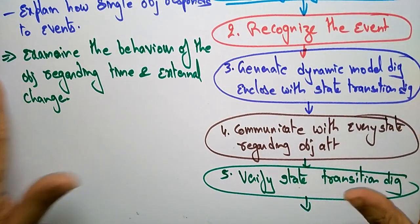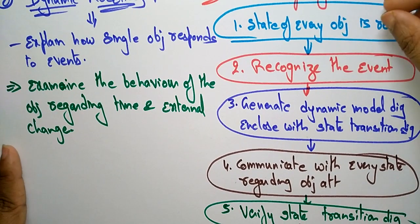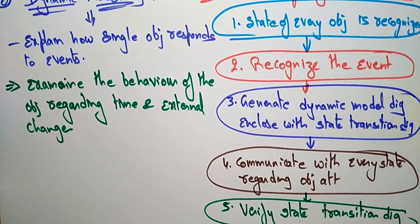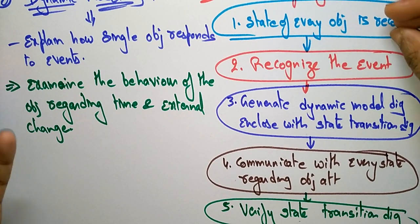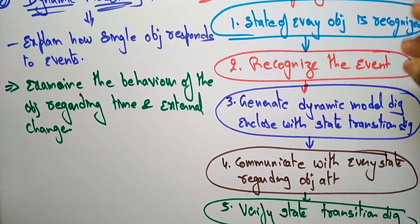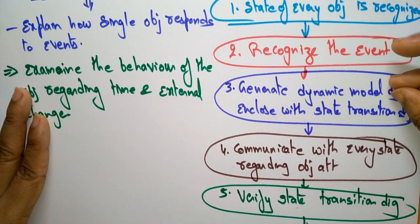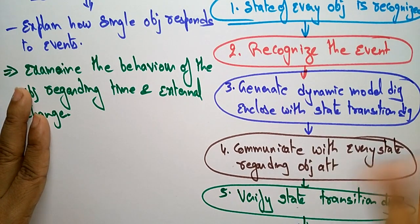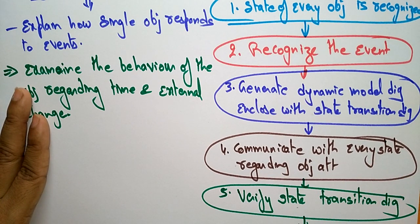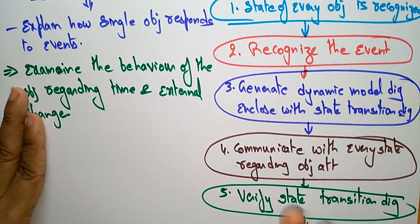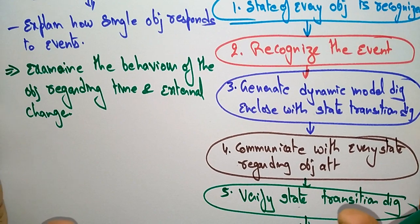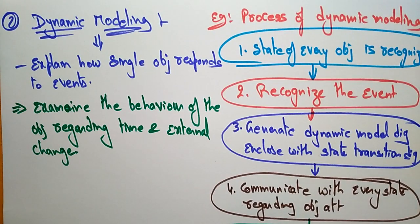So this is the process flow of dynamic modeling: first recognize the state of every object, then recognize the events for those objects, next generate the dynamic model diagram enclosed with the state transition diagram, then communicate with every state regarding the object attributes, and finally verify the state transition diagram. Now, coming to the third technique, functional modeling.